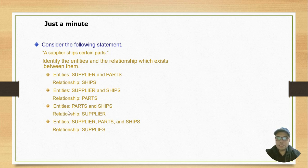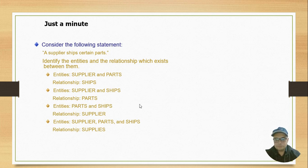Here you can see the options. Which one is the correct option? Here you can see entity and relationship for each section given. Entities are SUPPLIER and PARTS, and the relationship is SHIPS. The supplier can supply the parts by ships. Among them, the first one is going to be the correct option.